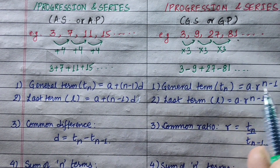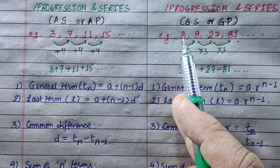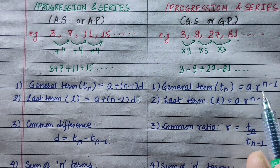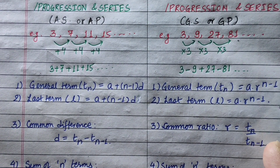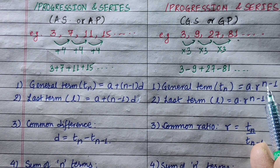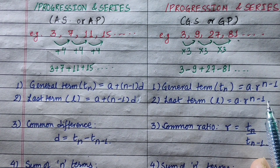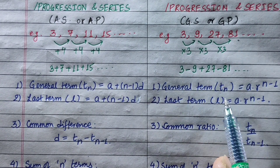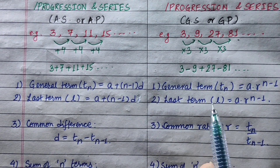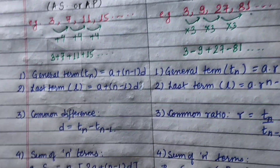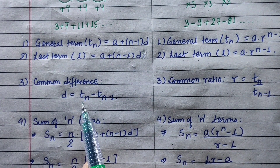Now for the geometric sequence, the general term is also Tn. For example, T10 equals a into r to the power 10 minus 1. The last term L is represented as a into r to the power n minus 1. The common difference d equals Tn minus Tn minus 1 for arithmetic progression. For geometric sequence, the common ratio r is what we calculate.